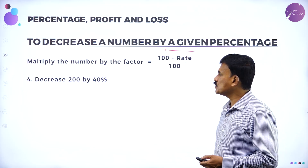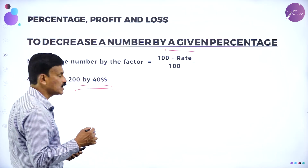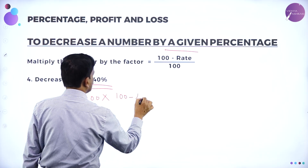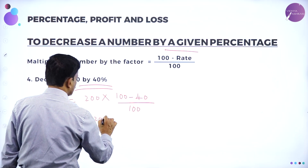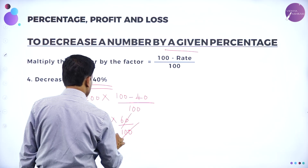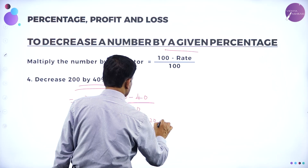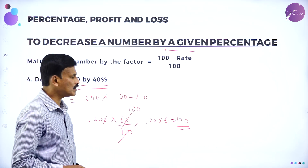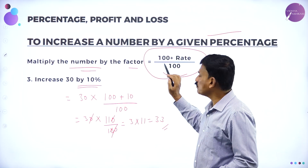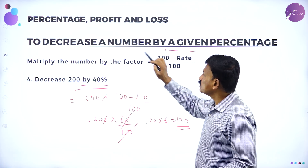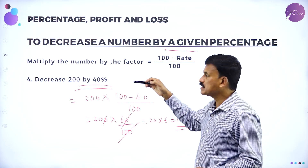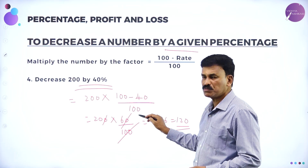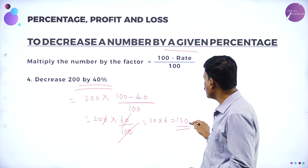Now let us take an example: decrease 200 by 40 percent. Here x is 200 and the percentage is 40. Therefore, the required answer is 200 multiplied by 100 minus 40 divided by 100 — that is 200 into 60 divided by 100. The zeros cancel, giving 20 into 6 equal to 120. So the required answer is 120. To decrease 200 by 40 percent gives 120.